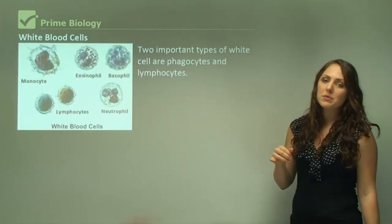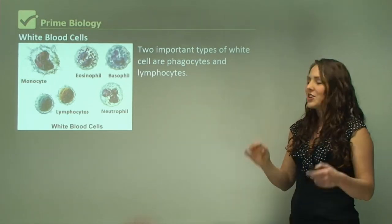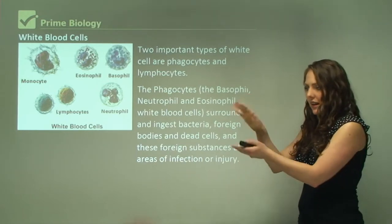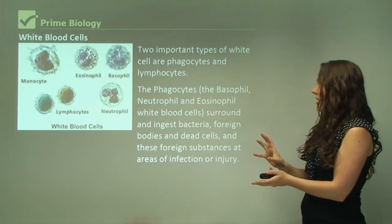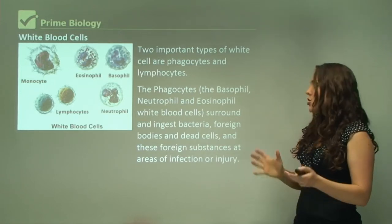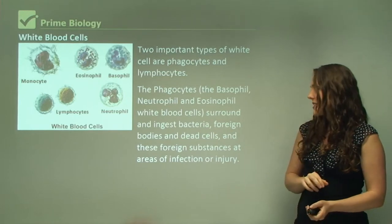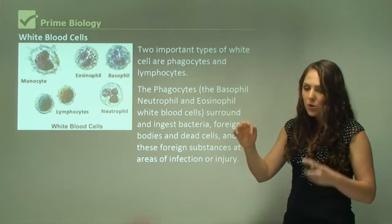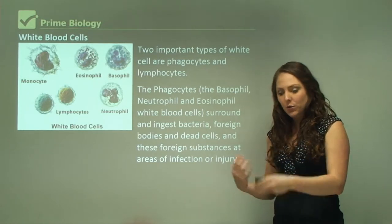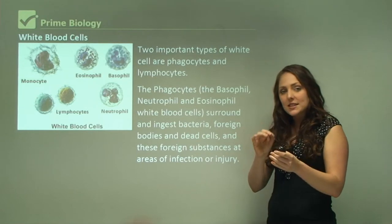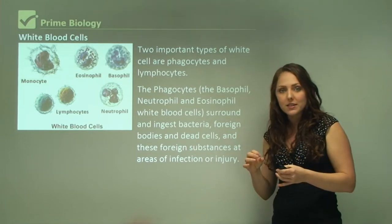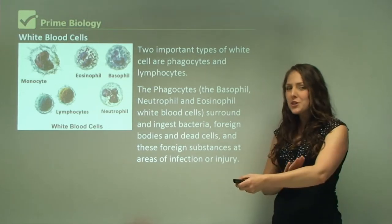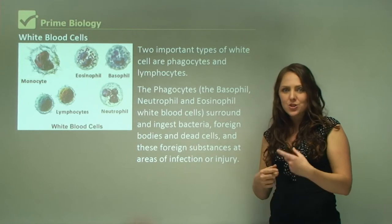There are five different types of white blood cells. Two important types are phagocytes and lymphocytes. Think of phagocytes like Pac-Man — they come along and eat things. The phagocyte white blood cells, including basophils, neutrophils, and eosinophils, surround and ingest bacteria, foreign bodies, and dead cells at areas of infection or injury. When you injure yourself — for example a cut or a blister from a shoe — white blood cells actually leak from the blood and concentrate at that area of infection to fight it. Redness developing within a few days is a sign of infection.